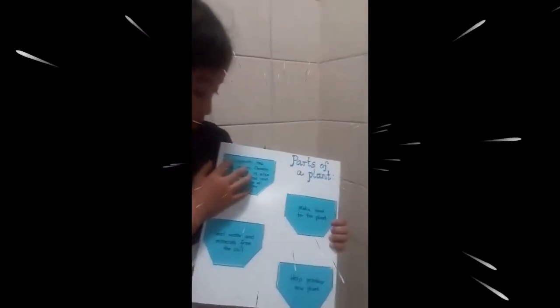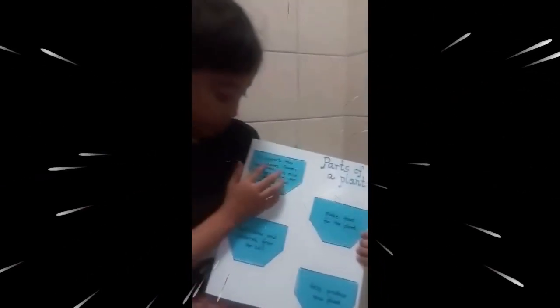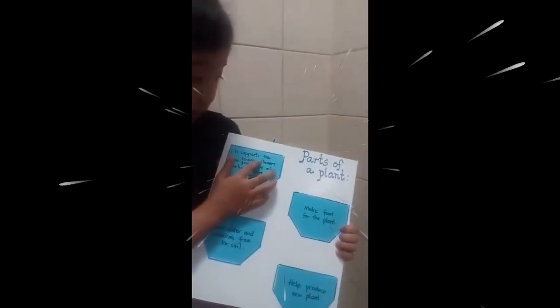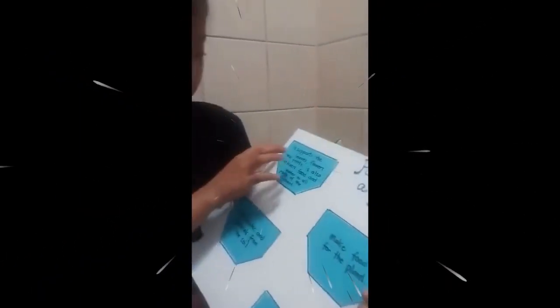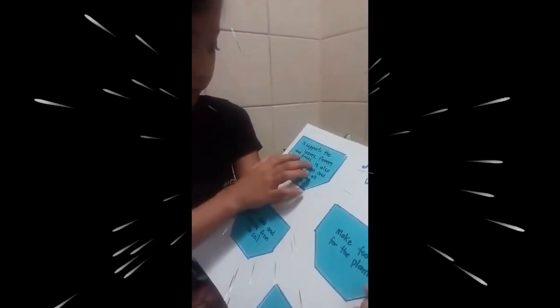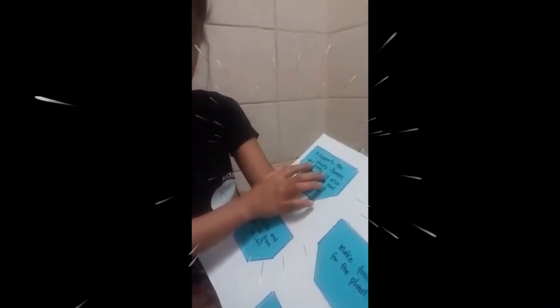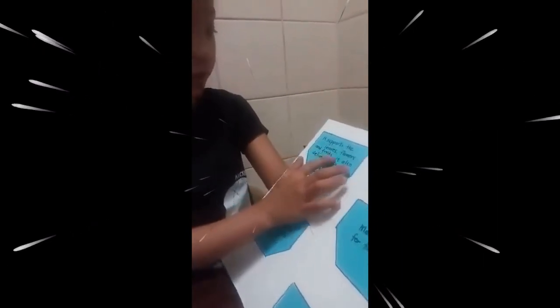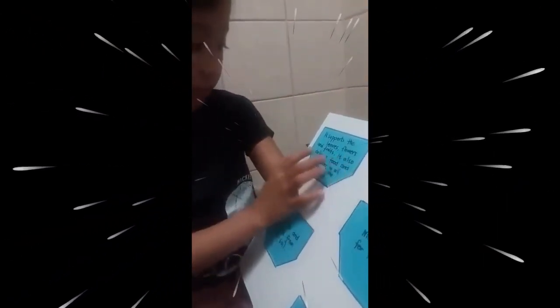Let's start reading. It supports the leaves, flowers, and fruits. It also delivers food and water to all plants. Parts of the plants. Very good. So what is that? It's a stem. Yes, it's a stem.